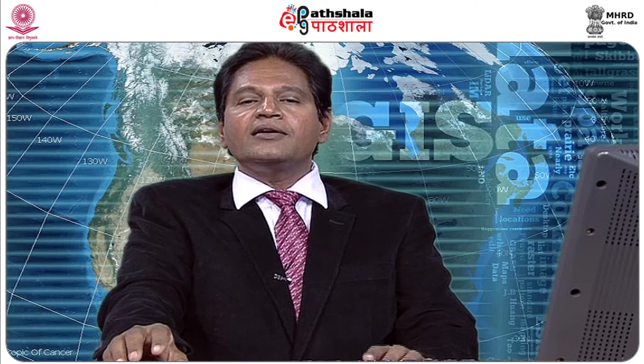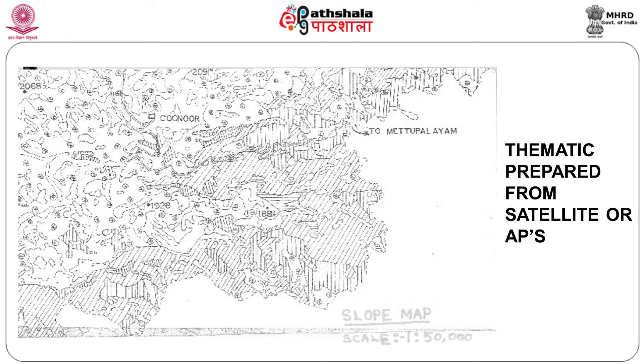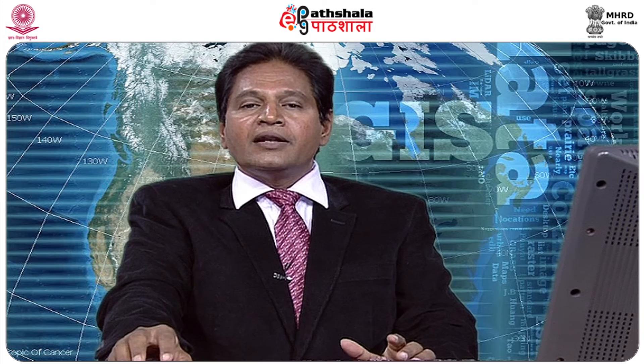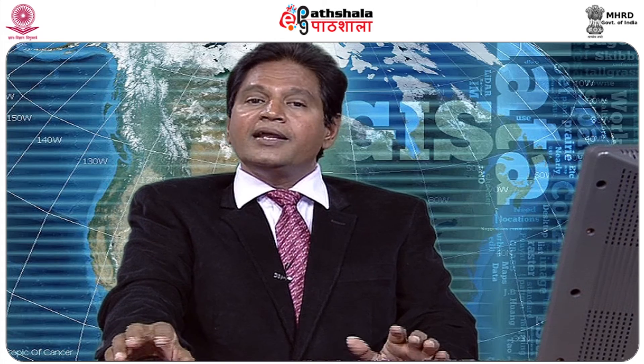Satellite data itself cannot be used directly in a GIS environment. It forms a base for generating a thematic map. Thematic maps represent a specific theme — for example, a soil map. Such thematic maps can be prepared from satellite data or from aerial photographs. Nowadays we can also incorporate satellite data into a GIS environment, digitize directly and prepare a thematic map.